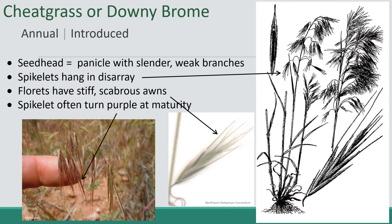The seed head is a panicle with weak panicle branches, so the spikelets hang down and the plant always looks like it's kind of in disarray. When you take a closer look at the spikelets, this plant has really obvious awns — the term scabrous means they are stiff and rough. The florets have a lemma and then an awn that is almost as long as the lemma. The plants start green and hairy, then turn purple or red, and that's when the plant goes from being decent forage to being really bad fuel for fires.